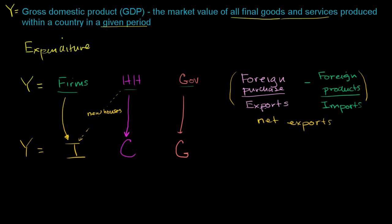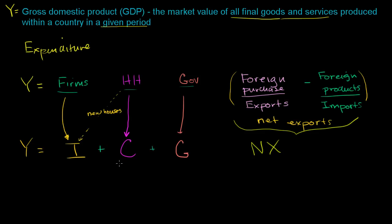If net exports are positive, we're exporting more than we're importing. If this number is negative, we're importing more than we're exporting. In the traditional expenditure view of GDP, this whole part is referred to as net exports. So when you sum up these things, you've broken down the expenditure view of GDP in the traditional sense. In the next few videos, I'm going to start thinking through a bunch of different examples and we'll think about which bucket each would fall into.